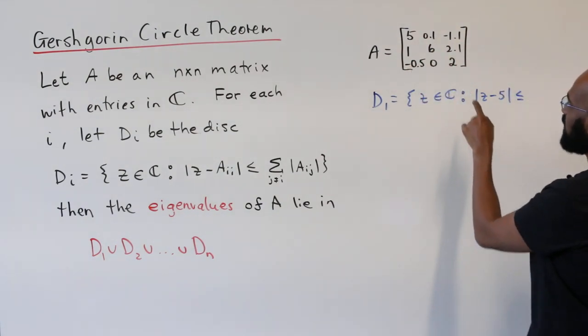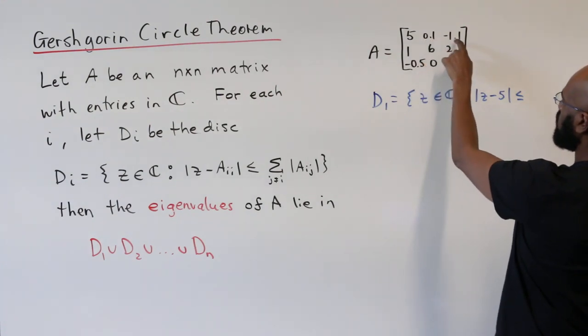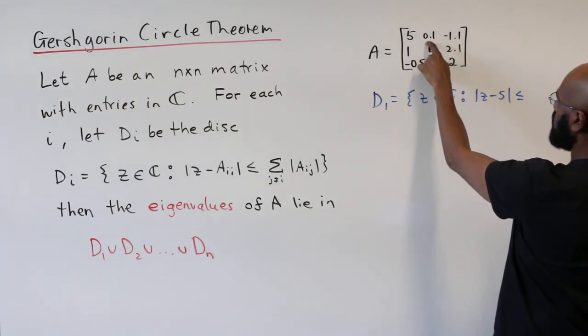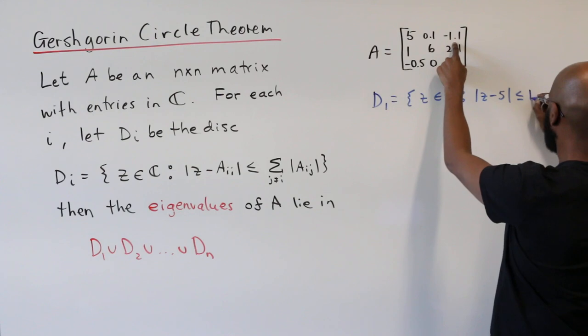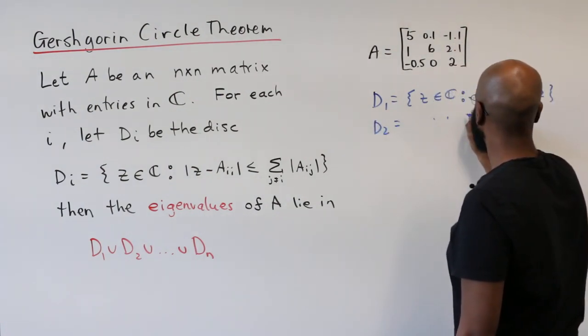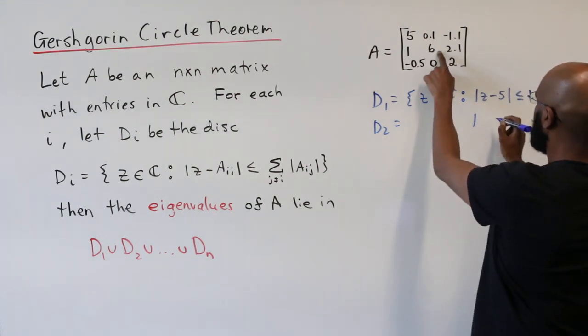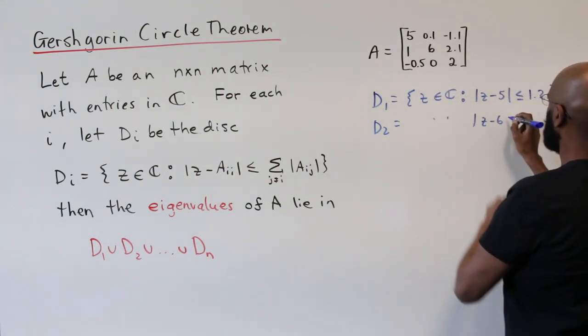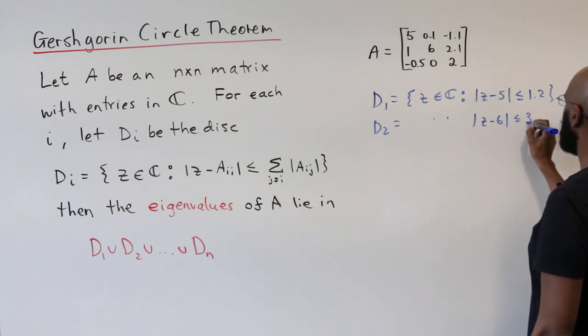is less than or equal to the sum of the absolute values of the other entries in the first row. In that case, this is going to be 0.1 plus 1.1, which is 1.2. Okay, disk 2, which will have similar formulation, will have the points where Z minus 6 is less than or equal to 3.1.